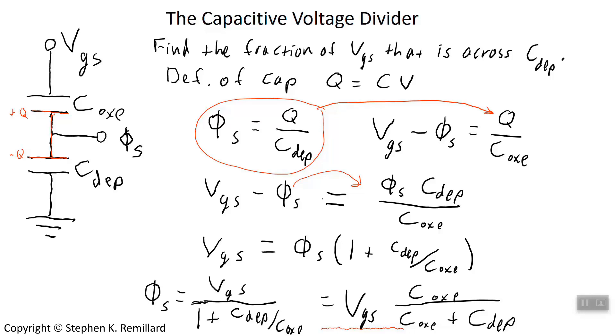That's gate source voltage divided by 1 plus the ratio of those two capacitors. Or solve it a little differently: multiply top and bottom by C oxide and simplify it to V gate source times the other capacitance over the sum of the two capacitances.